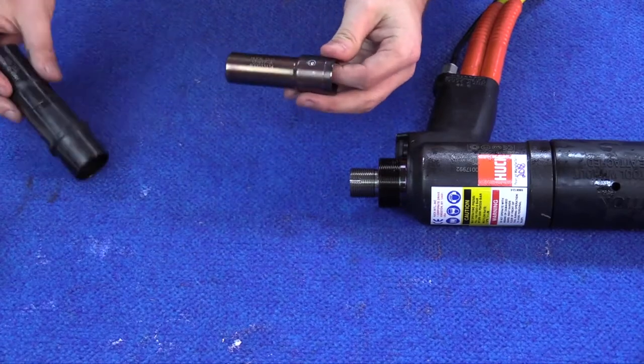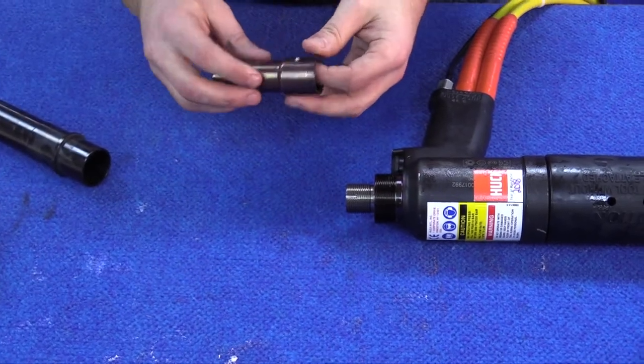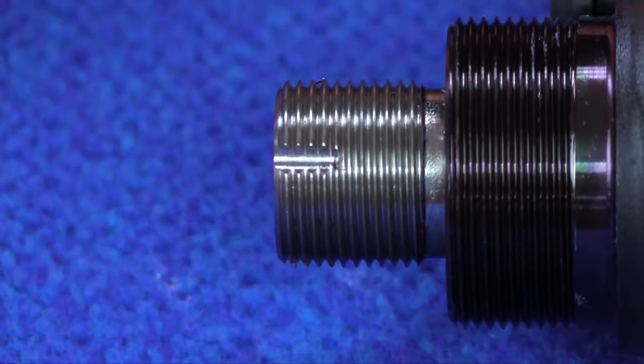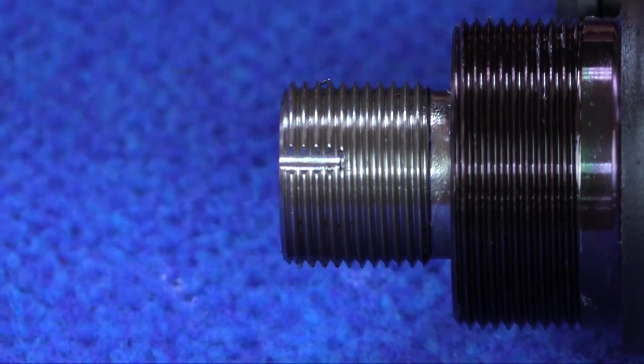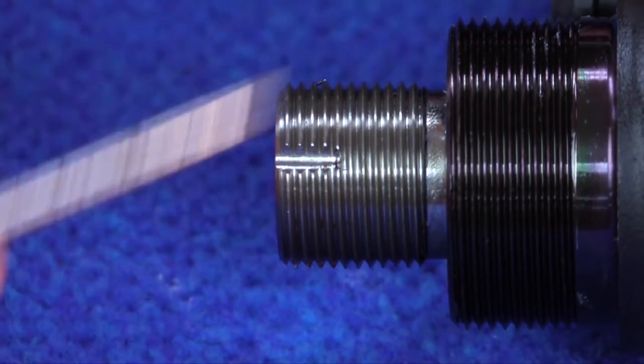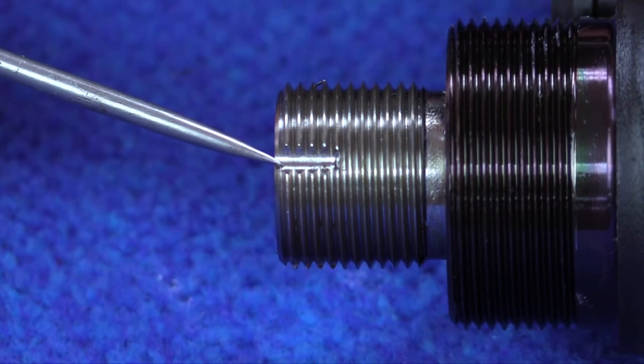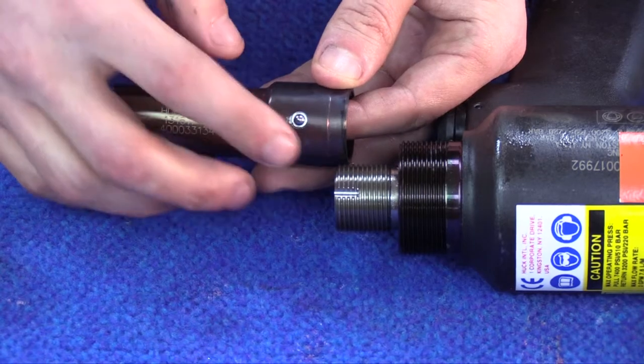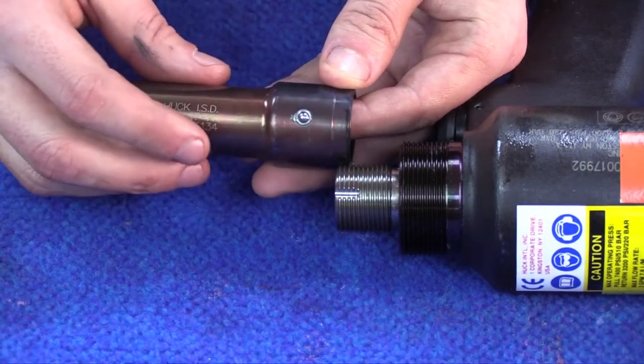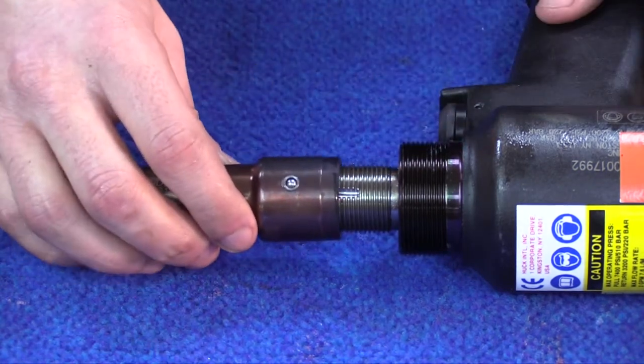Using a 3 1⁄8 inch BOM fastener as an example, install the nose assembly. Begin by threading the collar completely onto the piston. Note that there are four notches on the piston. The ball lock will be seated in the piston after it is completely threaded onto the tool.